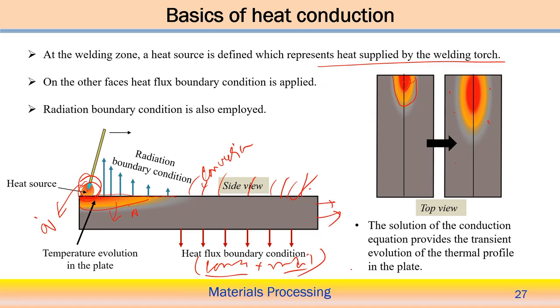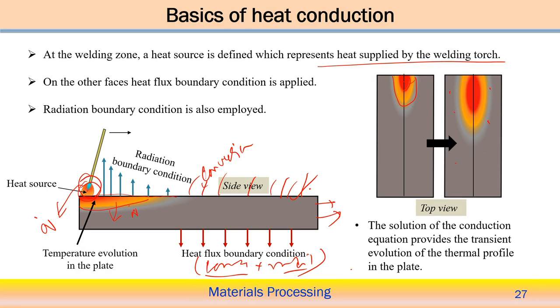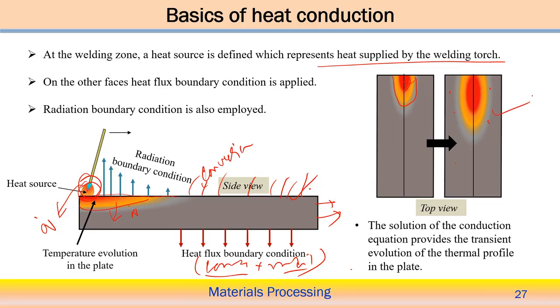Depending on the position — whether initial, cooling, or heating state, or steady state during holding — the appropriate equations are solved. In the welding problem, the volumetric heat generation term is incorporated through q-dot in the governing equation, and heat loss from the boundary by convection and radiation is treated as a heat flux boundary condition. In both cases we get the temperature distribution over the domain. This is how we distinguish the heat treatment problem from the welding problem.